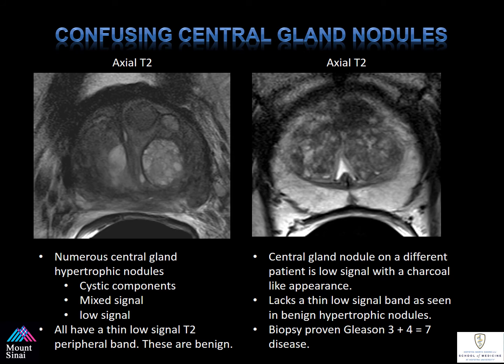Evaluating the central gland can be confusing and perplexing at times. On the left, there are numerous central gland hypertrophic nodules with cystic components, mixed signal, and low signals — all have a thin, low-signal T2 peripheral band surrounding these lesions, and these are all typically benign. However, notice this central gland nodule with a low signal and charcoal-like appearance. It lacks that thin low-signal band seen in benign nodules. We biopsied this area and it was found to be Gleason 3+4 prostate cancer. Please take a moment to appreciate the difference between the two images.